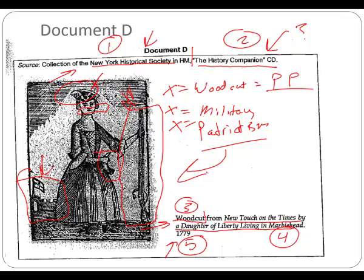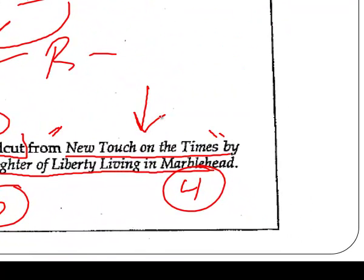So woodcut, military, and patriotism are three great axes for your context. Let's go to critique. Who's the author? No specific author as far as who carved it, but it was originally presented in that paper. No specific author — originally presented 1779 in the New-Touch on the Times. Author credibility: limited. We don't know the exact carver, but we know it has a clear purpose. Consider it the rough draft of a political cartoon — to be reprinted.